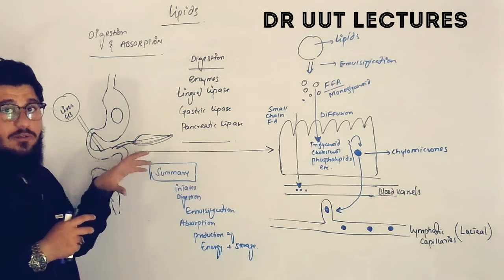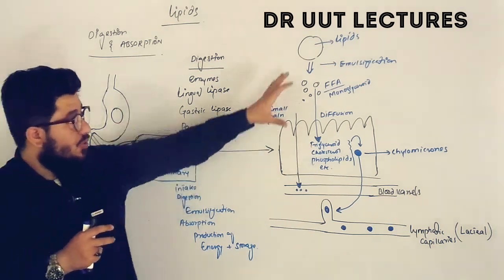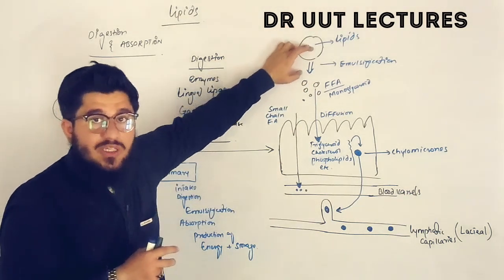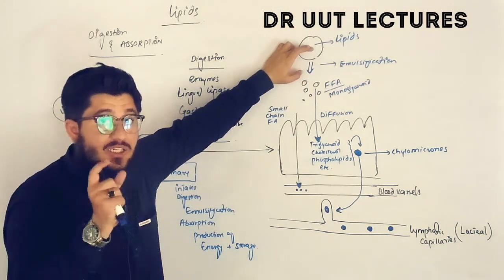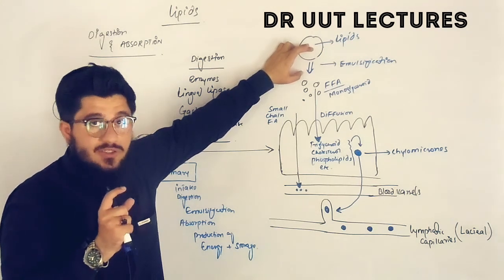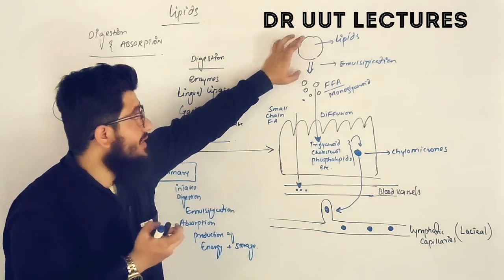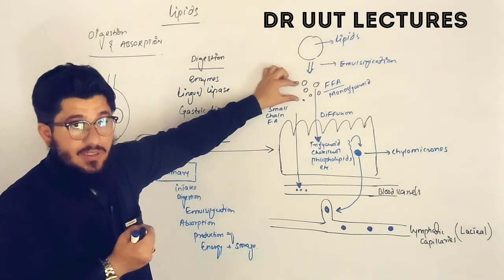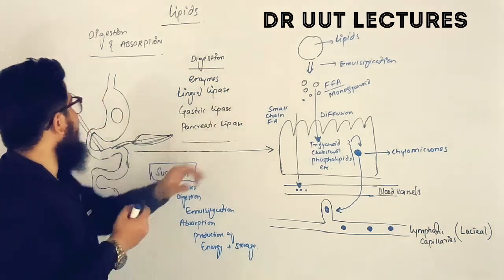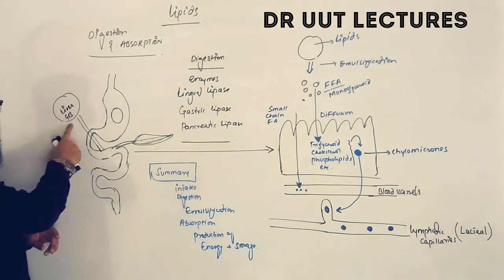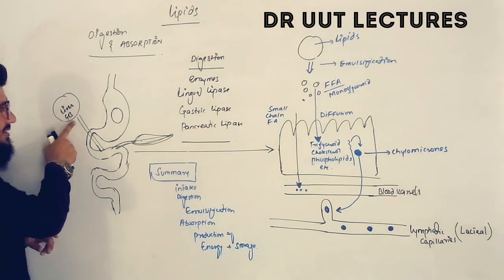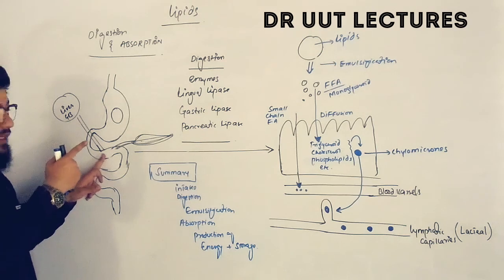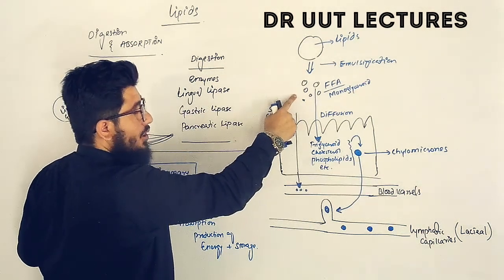Let's understand the entire process of digestion and absorption from a diagrammatic point of view. The lipids that we ingest are actually large-sized particles. It is not possible for the body to absorb these large-sized particles, so they must be converted into small-sized particles. This is brought about by the bile salts from the gallbladder, which are secreted into the small intestine, converting lipids into small, tiny droplets.